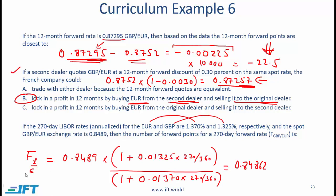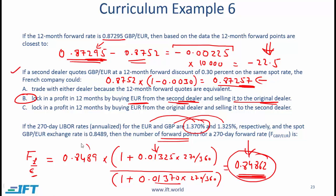Finally, for the last calculation: note that the euro is the base currency, so the euro interest rate appears in the denominator and the pound interest rate appears in the numerator. We make the adjustment for 270 days. Since the euro interest rate is higher, the forward rate is lower than the spot rate — the euro is trading at a discount relative to the pound. To get the number of forward points, take the forward rate minus the spot rate and multiply by 10,000.